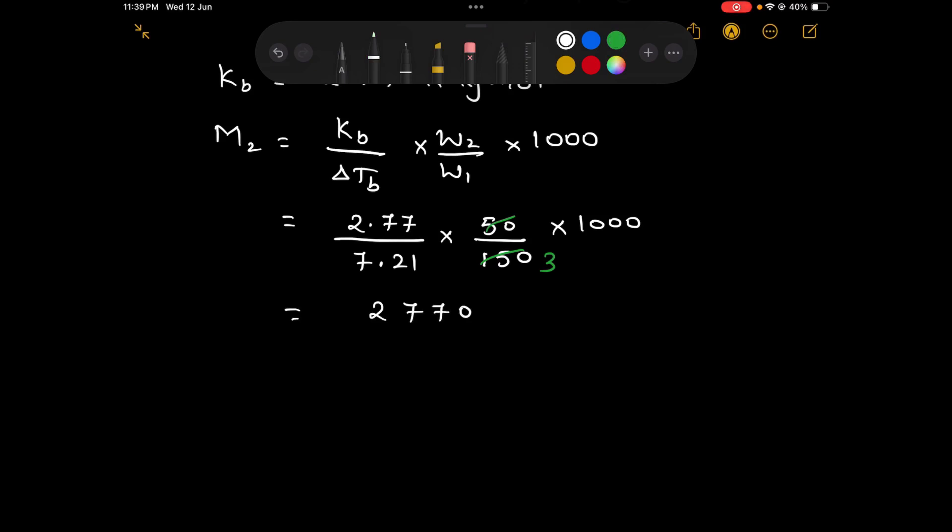This will become 2770 divided by, if we multiply 7.21 and 3, we get 21.63.